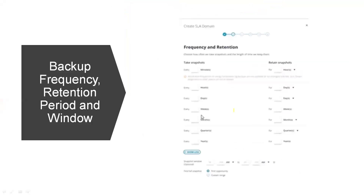Next, backup frequency. Here we can select a snapshot frequency: every minute, or hour, days, weeks, months, quarters, yearly — and respective retention periods. Here we can select hours, days, weekly, weeks, months, quarters, and so on.